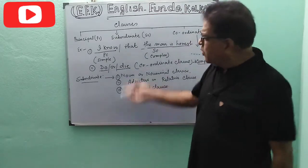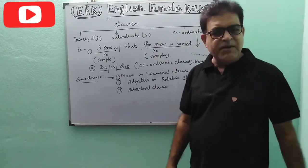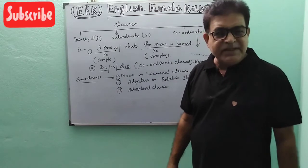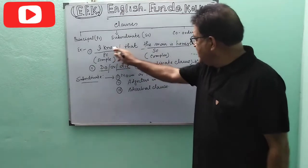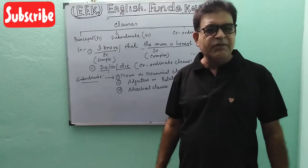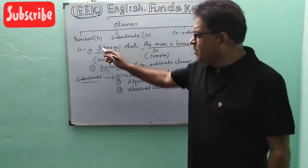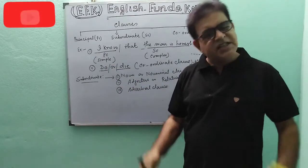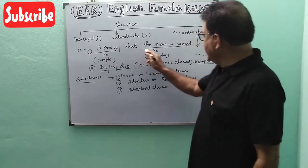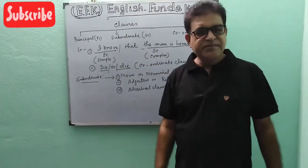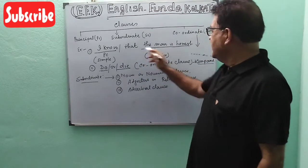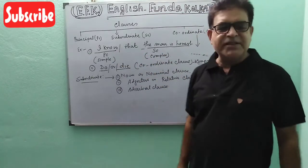For example: 'I know the man' — this is a Principle Clause. 'I know that the man is honest' — 'that the man is honest' is the Subordinate Clause. Together, 'I know that the man is honest' forms a complex sentence.